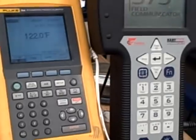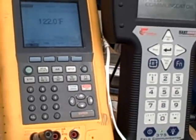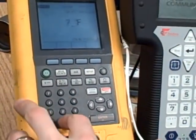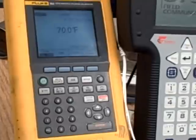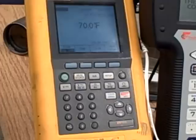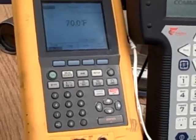So 20 to 120, halfway in that range would be 70 degrees. I'll set this to 70 degrees Fahrenheit. Now we should be inputting a signal to the transmitter to drive it to 12 milliamps. And that's how you set up the Fluke 744.